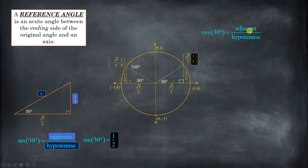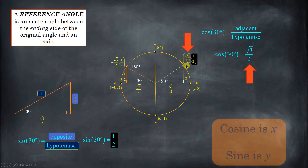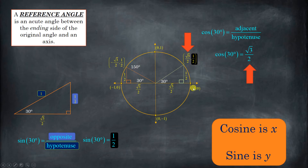Let's see if that works for cosine as well. Cosine is adjacent over hypotenuse, and that gives us the square root of 3 over 2 divided by 1, which is just the square root of 3 over 2. So on a unit circle, the reason all of those points are so important is that cosine is the x-coordinate and sine is the y-coordinate. For example, here at 90 degrees: the cosine of 90 degrees is 0, and the sine of 90 degrees is 1.